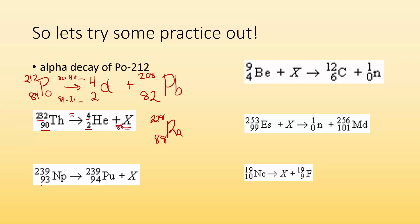Taking a look at this one. I got 93 has to equal 94 and some number. It's going to have to be a negative number to bring 94 down to 93. And 239 has to equal 239 and some number. Well, that number is going to have to be 0. So what is that thing with a negative 1 charge and a mass of 0? That's a beta particle or an electron.